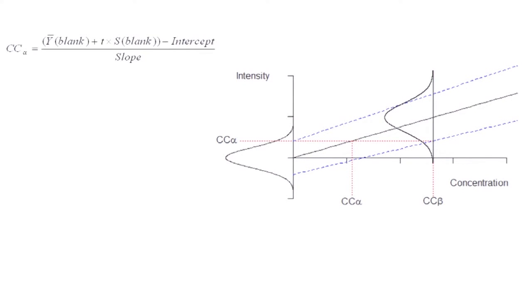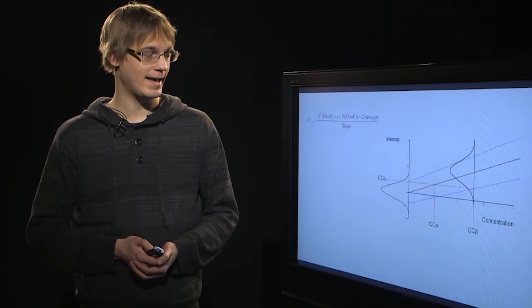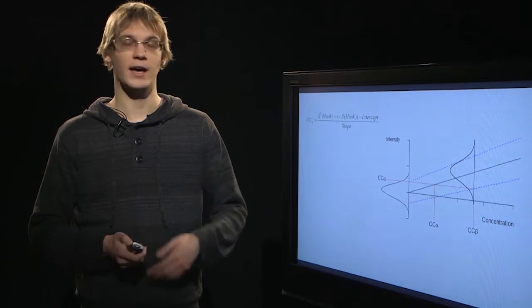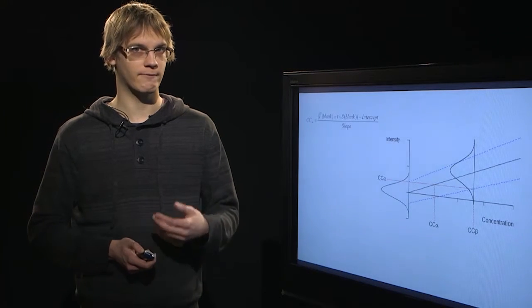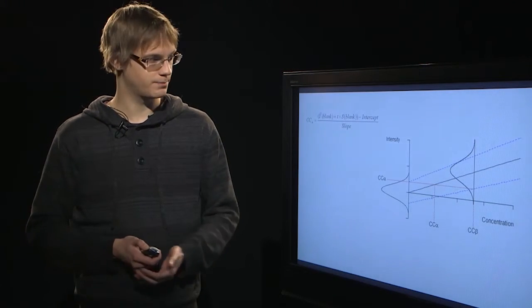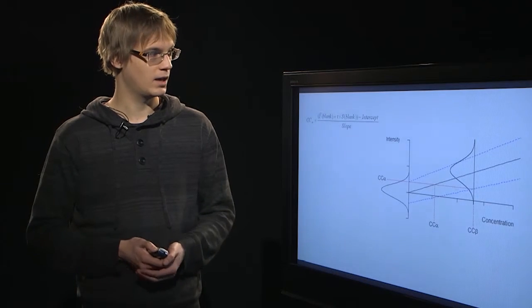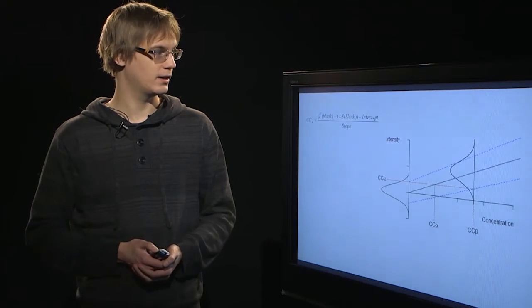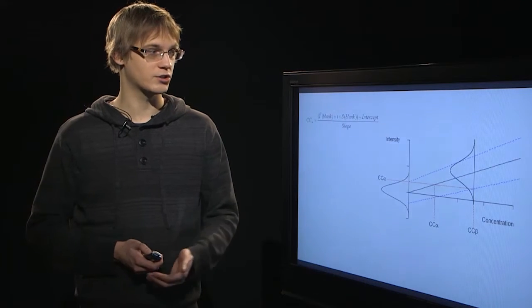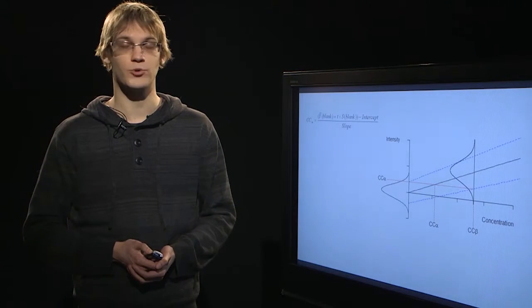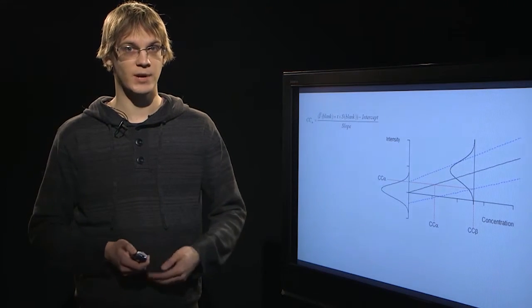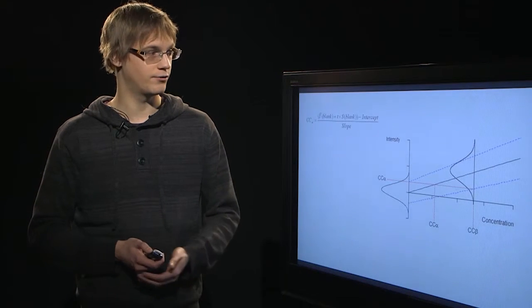This student coefficient comes from t-distribution that depends on the number of measurements that have been made and on the alpha value we have defined. After we find it in the intensity scale, we can use the intercept and slope of the calibration function to estimate the concentration value.